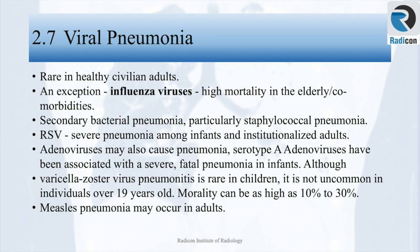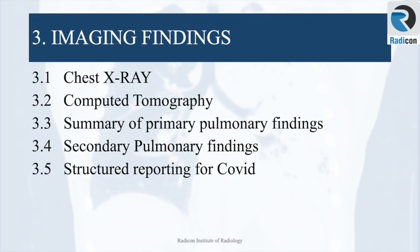That concludes our discussion on viruses, their origin, their types, and various pathologies caused by them. Next, we will look at the coronavirus and its imaging findings. In the third section of this presentation, the imaging findings, we will discuss primary pulmonary findings on chest x-rays and CT with some secondary pulmonary findings, as well as structured reporting for COVID-19 cases.